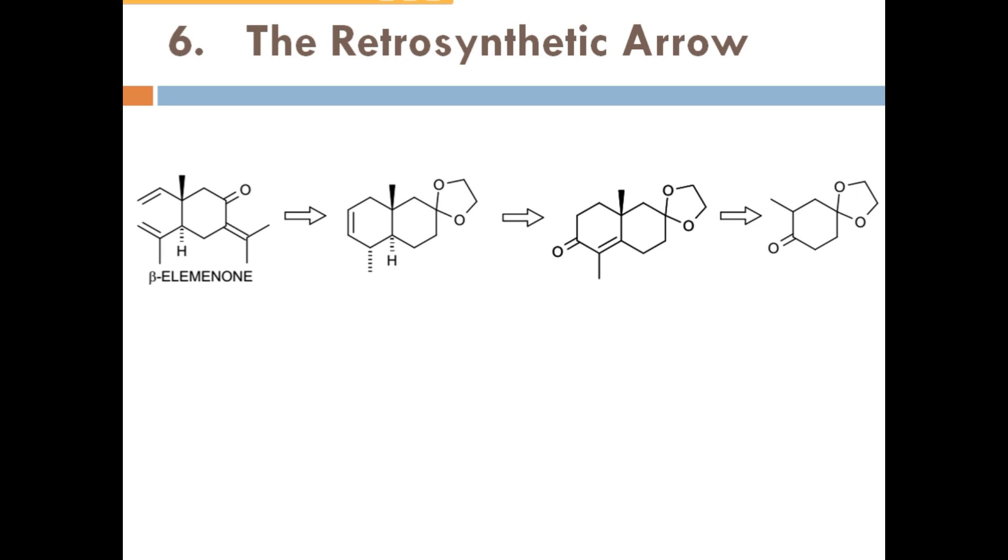The retrosynthetic arrow. This arrow is used when reverse of the reaction arrow. It is also known as reverse of the reaction arrow, used in planning of the synthesis. Retrosynthetic arrow means how this product can be synthesized from these possible reactants.